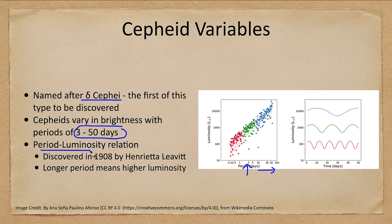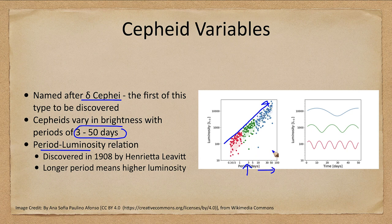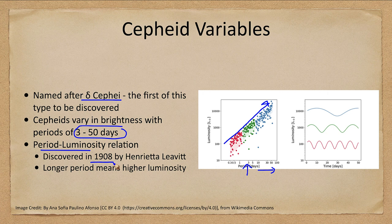The period-luminosity relationship between them: when we graph period and luminosity, we find that it's not scattered all over the place, but there is definitely a relationship between period and luminosity. Those variables with very long periods are much brighter; those with very short periods are fainter. We can use that to help us determine distances. This was discovered in 1908 by Henrietta Leavitt and used by Edwin Hubble in the 1920s to determine the distance to the Andromeda Galaxy.